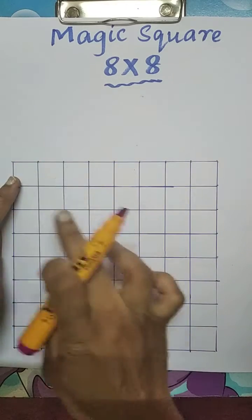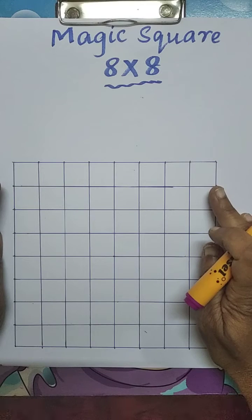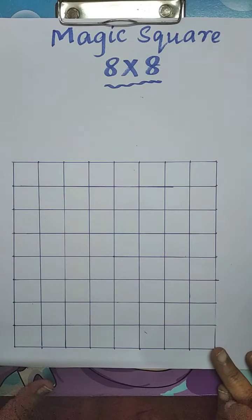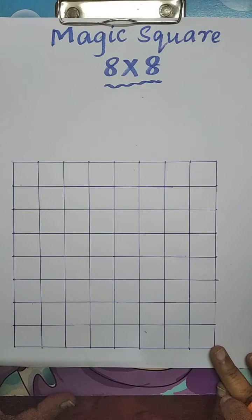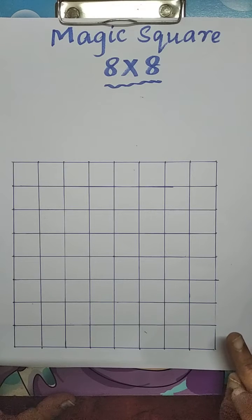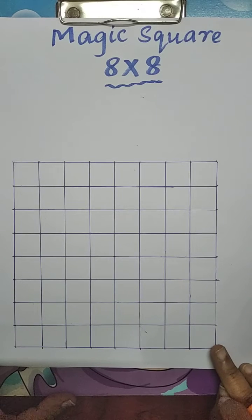Here 8 columns are there and 8 rows are also there. Total 64 boxes. 8 x 8, that is 64 boxes.